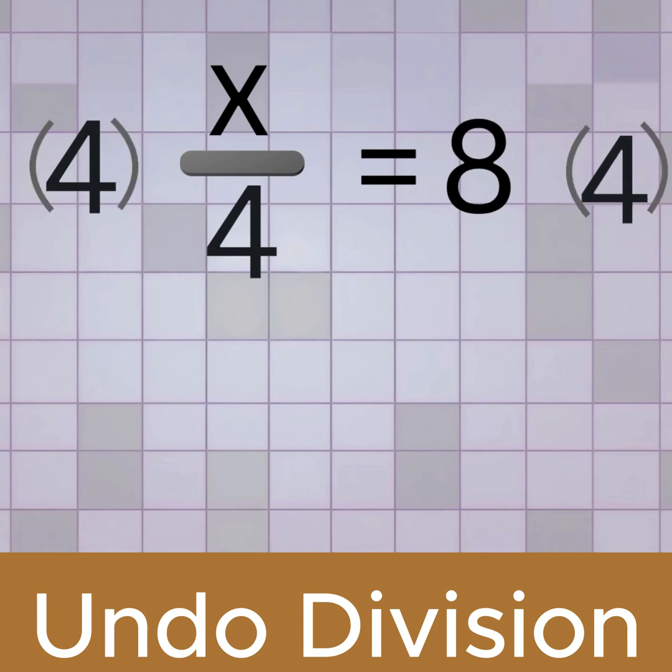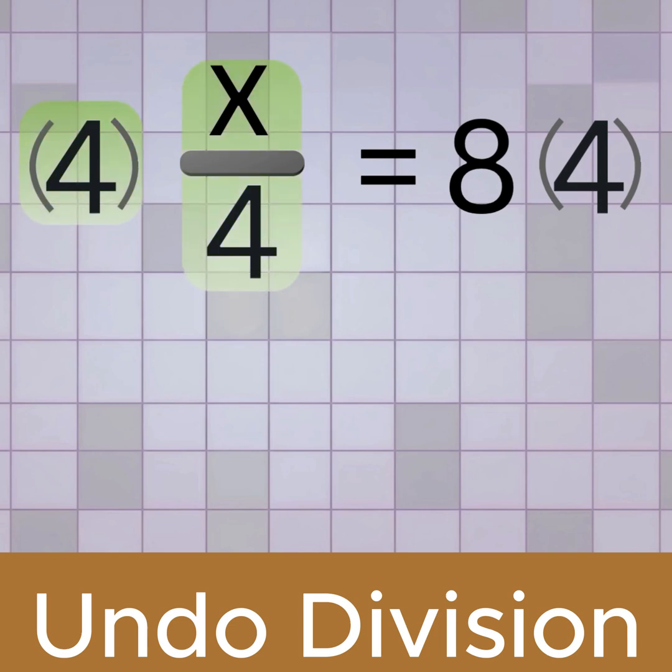So now we write 4 in parentheses next to the fraction. We place the number 4 in parentheses next to the variable over 4, showing that 4 is being multiplied by the entire fraction.